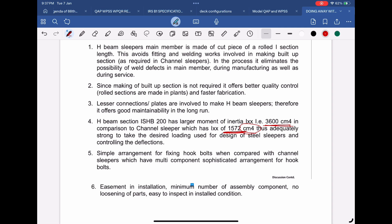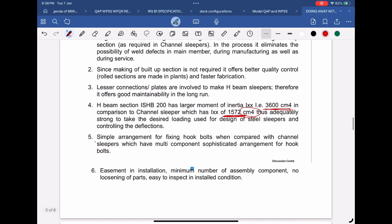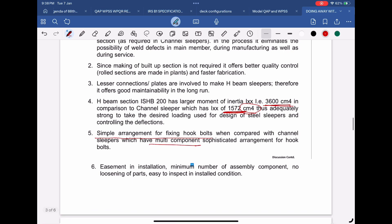H-beam sleeper has simple arrangement for fixing hook bolts when compared with channel sleepers which have multi-component sophisticated arrangement for hook bolts. At present there are two types of RDSO standard H-beam sleepers.